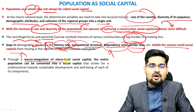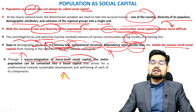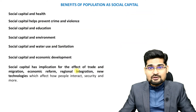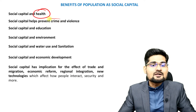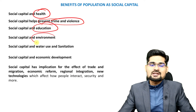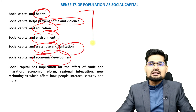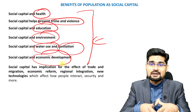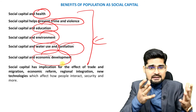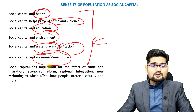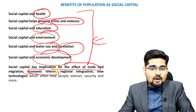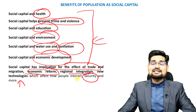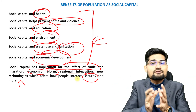What are the benefits of social capital? Benefits can be found in the health sector, in prevention of crime and violence, in education, environment, water usage, sanitation, and economic development — all things that contribute to social well-being. If you have a good amount of social capital, these dimensions will really improve. Social capital has implications for trade, migration, economic reforms, regional integration, new technologies, security, and safety — all these things can be ensured if there is greater cohesiveness among people.